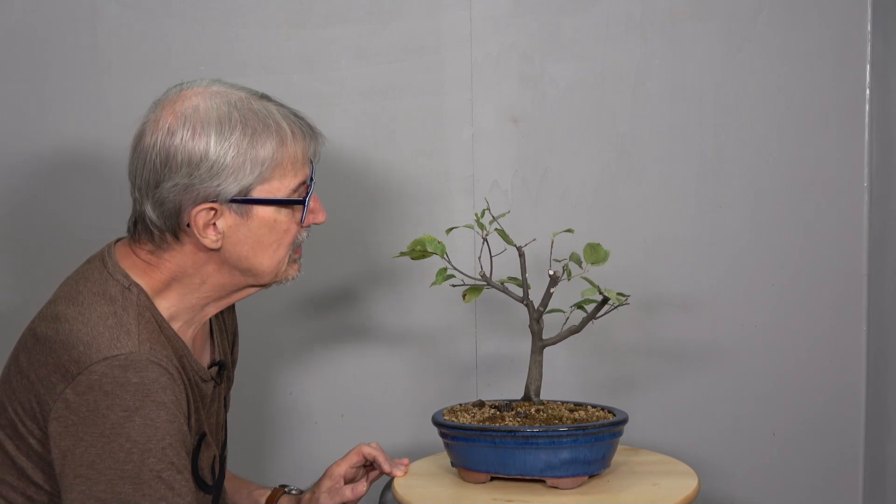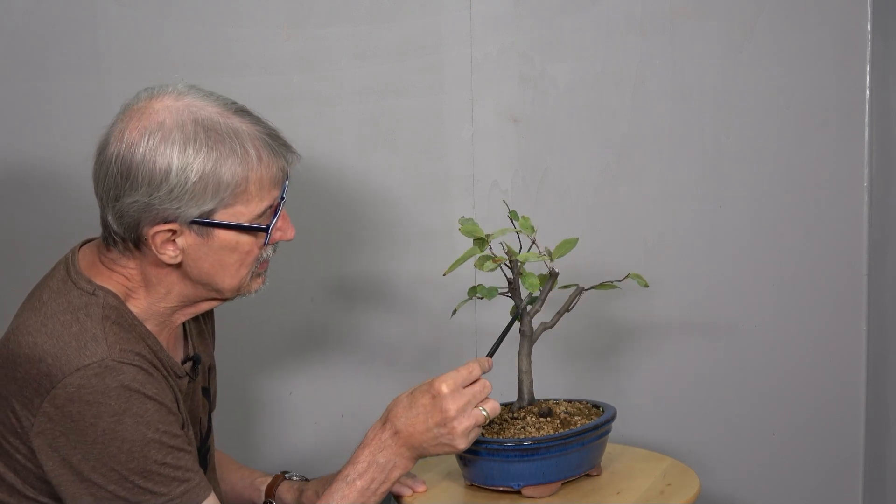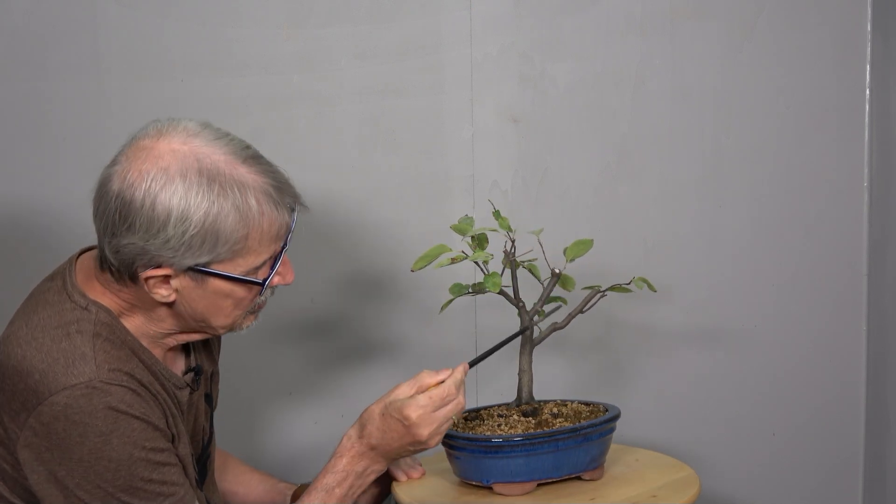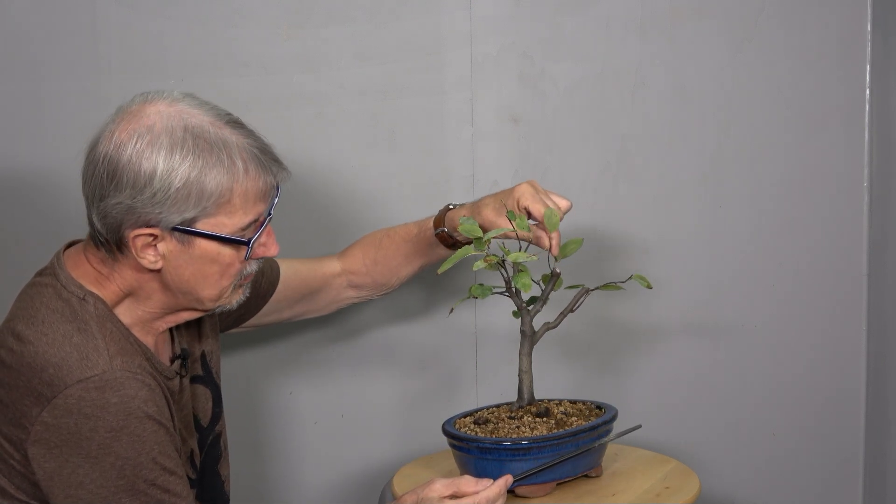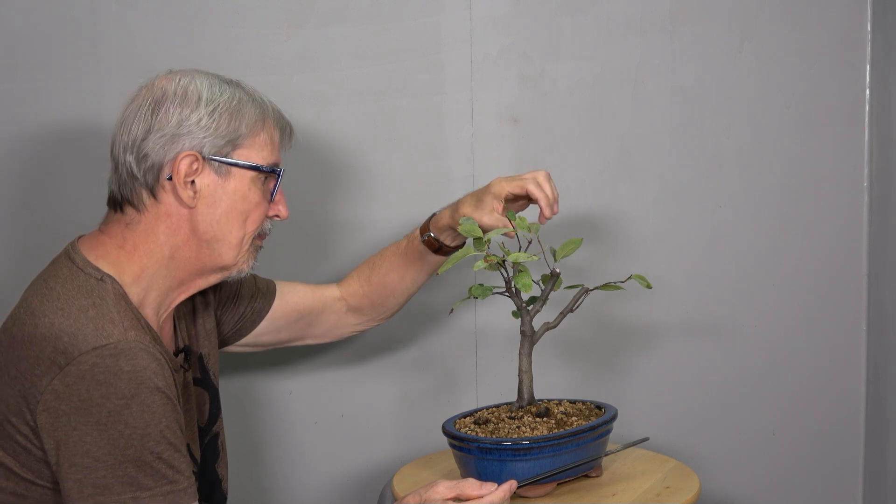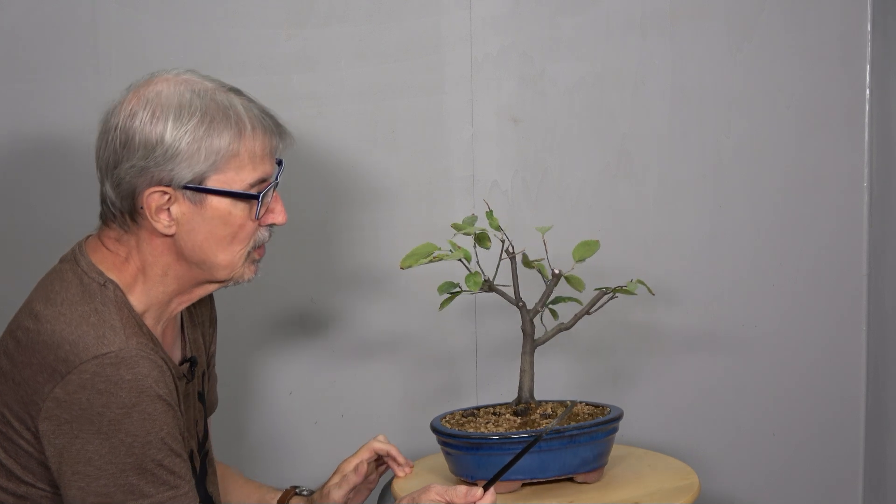Die Richtung mancher Äste sehen jetzt vielleicht ein bisschen, naja, nicht passend aus. So wie der hier zum Beispiel. Der parallel zu diesem läuft. Aber ich muss mal gucken, wenn da vorne nichts kommt, habe ich hier noch die Möglichkeit, den mir ein bisschen so rüber zu holen. Oder mit dem als neue Spitze auch weiter zu gehen. Müssen wir auf einmal schauen.